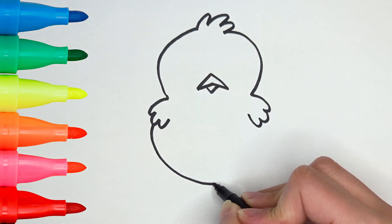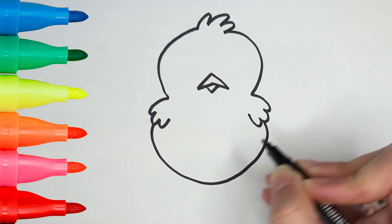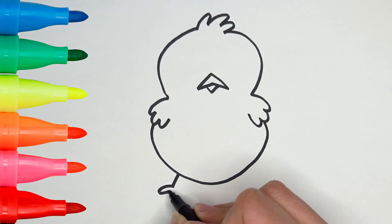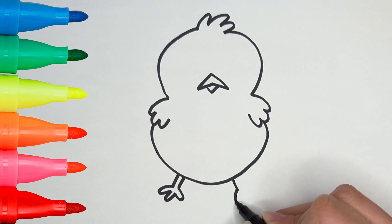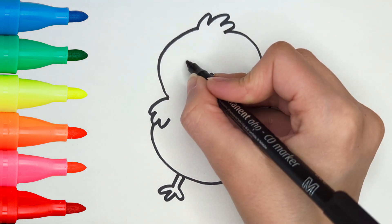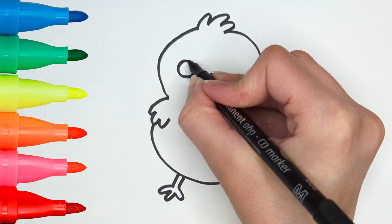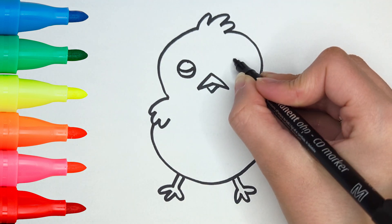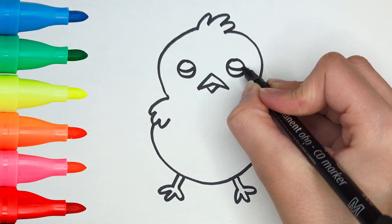The body is circular like the head. And now two feet, one and two. Very good! Let's draw the eyes. One eye and the other. So cute!